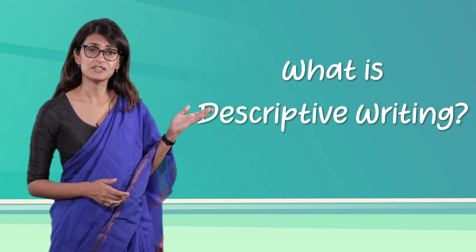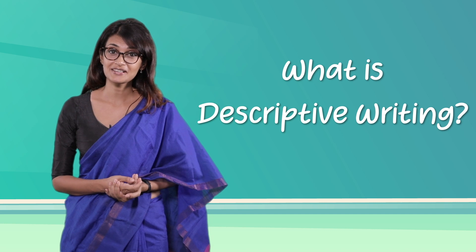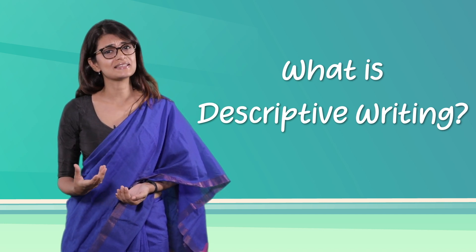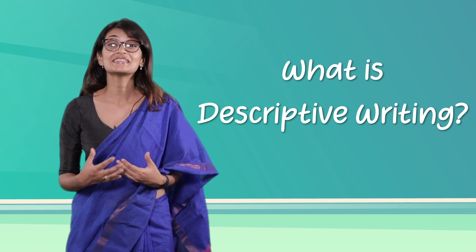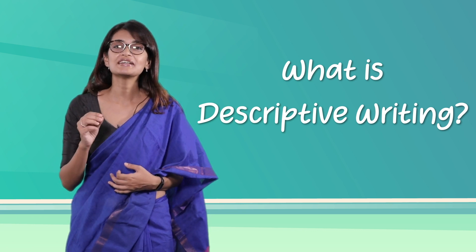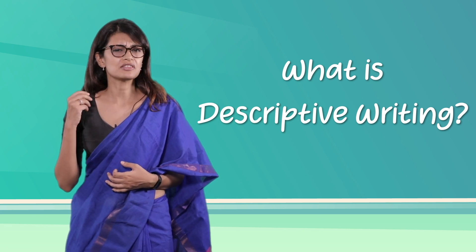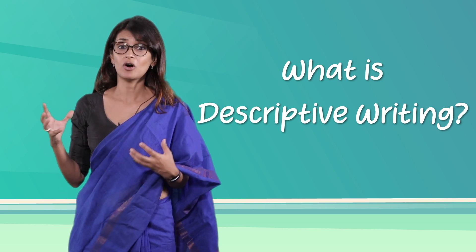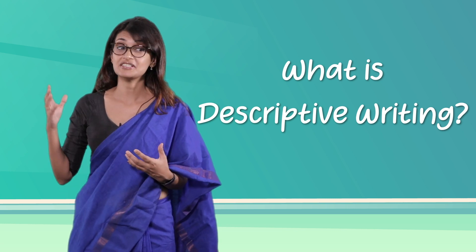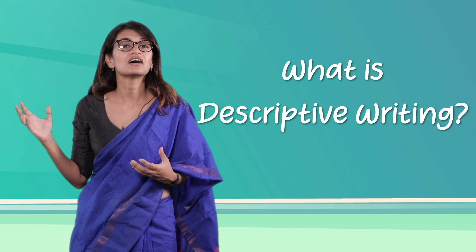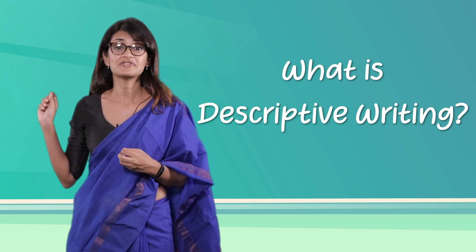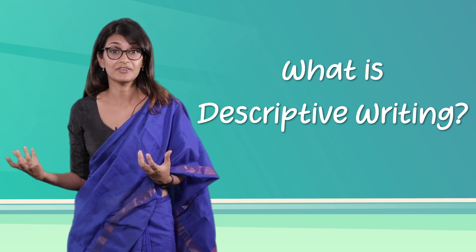What is descriptive writing and why is it important for us to know how to describe people, places and things? The answer is simple — it is to create an image in the reader's or the listener's mind. The primary objective of descriptive writing is to provide a clear picture of what you have seen or experienced.